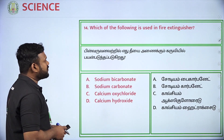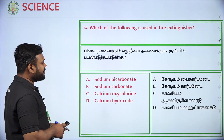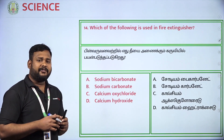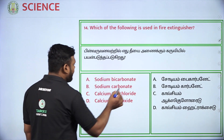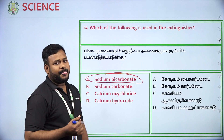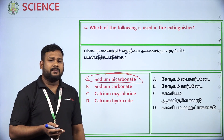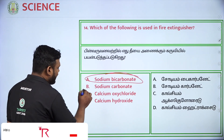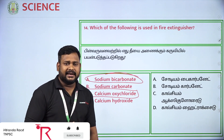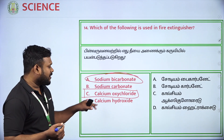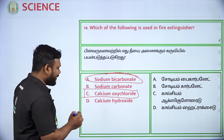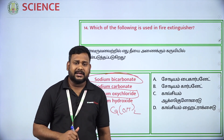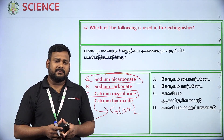Which of the following is used in a fire extinguisher? Options: Sodium Bicarbonate, Sodium Carbonate, Calcium Oxide, Calcium Hydroxide. The fire extinguisher uses Sodium Bicarbonate. Calcium Oxide is bleaching powder used as a disinfectant. Calcium Hydroxide is slaked lime, used to paint walls. So option A — Sodium Bicarbonate — is the answer.